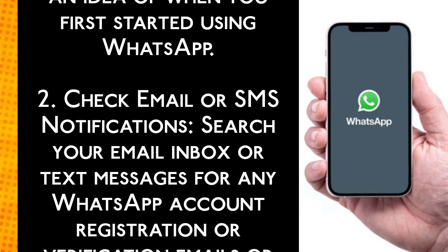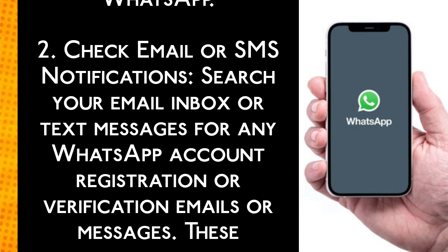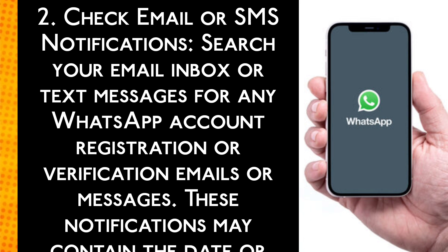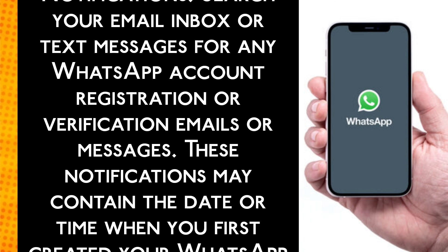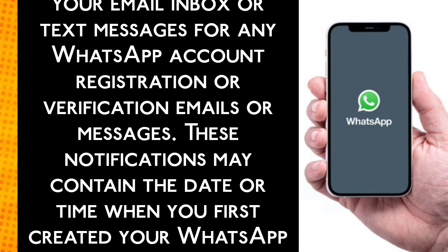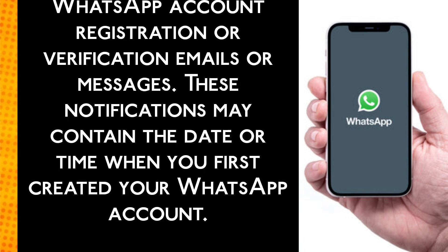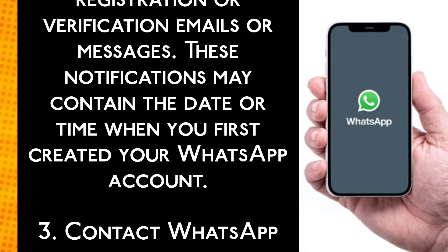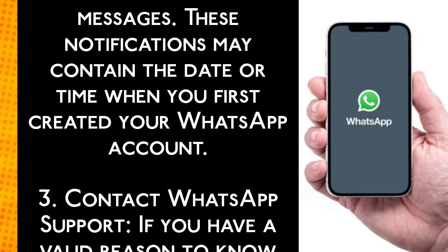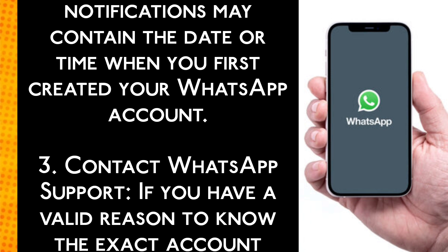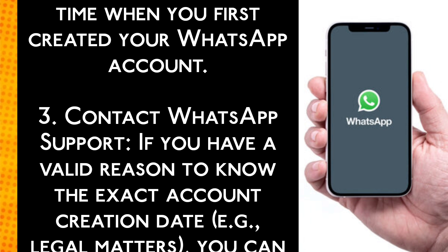Method 2: Check Email or SMS Notifications. Search your email inbox or text messages for any WhatsApp account registration or verification emails or messages. These notifications may contain the date or time when you first created your WhatsApp account.